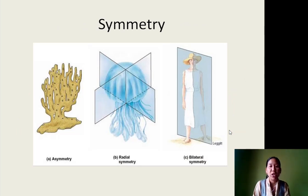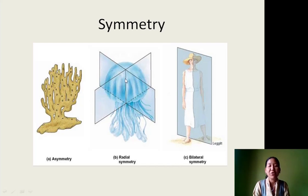Next is symmetry, that is body symmetry. Here we look at whether the body can be divided into two equal parts or not. In the case of sponges, you cannot divide the body into two equal halves, so they are asymmetrical. Then we have symmetry — whether the organism can be divided into two equal halves in one plane or more than one plane. For example, an organism from Cnidaria can be divided into two equal halves from more than one plane. If you are able to divide into two equal halves from more than one plane, such symmetry is called radial symmetry.